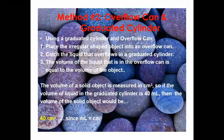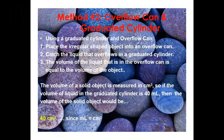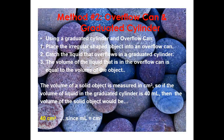You can also measure the volume of an irregular object using an overflow can. Place the object into the overflow can, and catch the liquid that overflows into a graduated cylinder. The volume of the overflowed liquid equals the volume of the object.